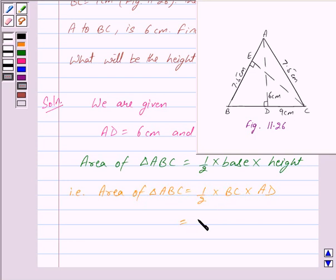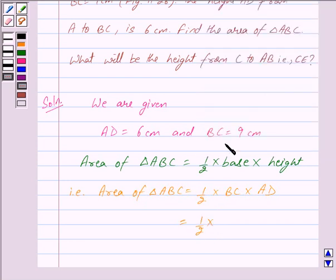This equals 1/2 times BC equals 9 cm times AD equals 6 cm.